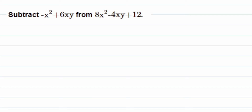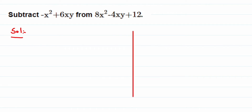Here's a question on algebra: subtract minus x squared plus 6xy from 8x squared minus 4xy plus 12. They're asking to remove the first expression from the second one. I'm going to show you both the horizontal method and the column method, also called the vertical method.